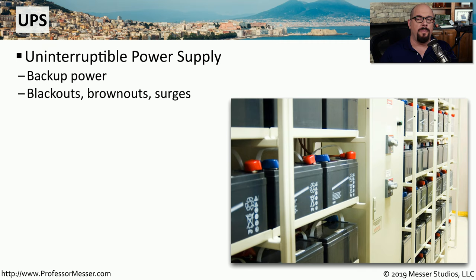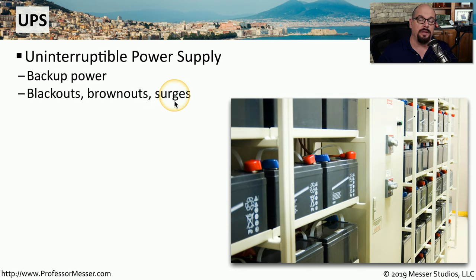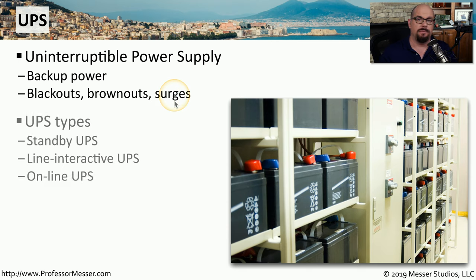We can't control the power that's coming into our systems, but we can control what we do if we happen to lose that power source. You want to have an uninterruptible power supply, or UPS, that will provide backup power if you lose the primary power source. The UPS is also very good for protecting against brownouts, where you have a lowering of the available voltage, or power surges where there is a spike of voltage. Depending on the needs and budget, you may have one of three different kinds of UPS.